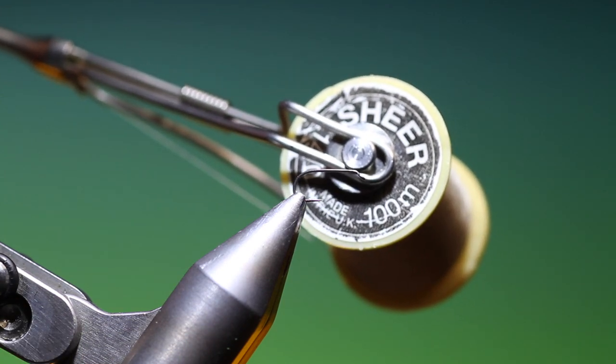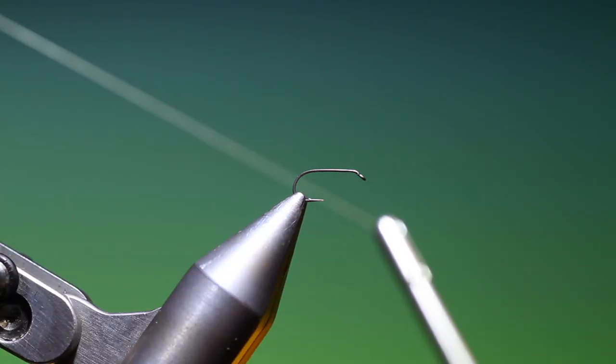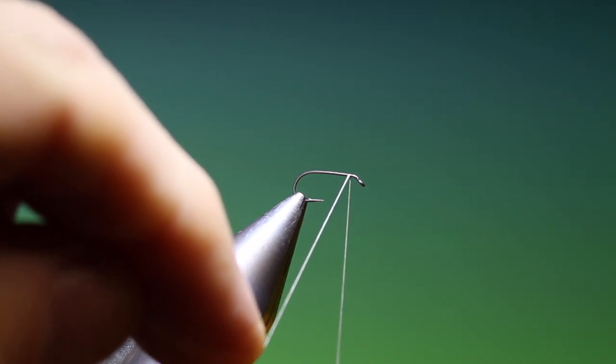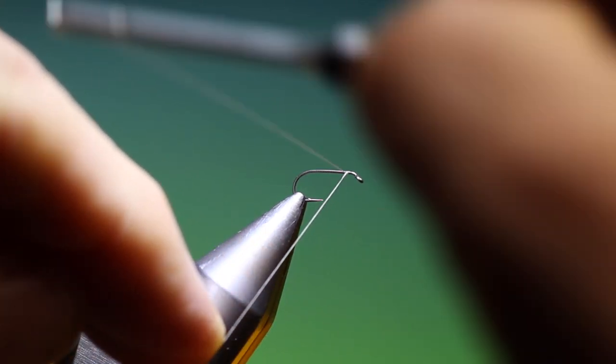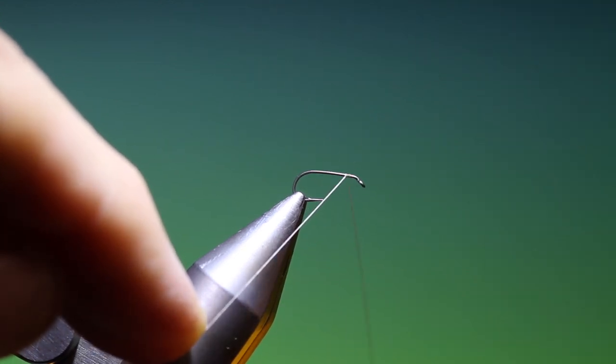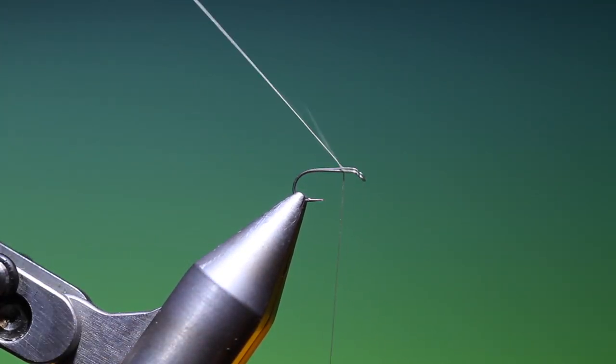I have Shear 40 nought tan. You can use different colors of course, depending on what you require. So four or five turns forward, just like that.